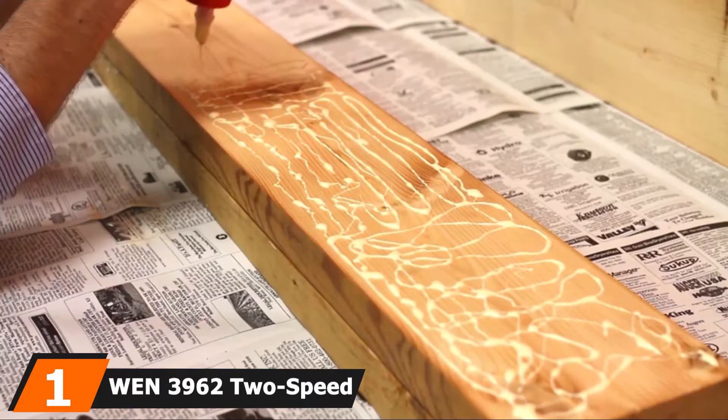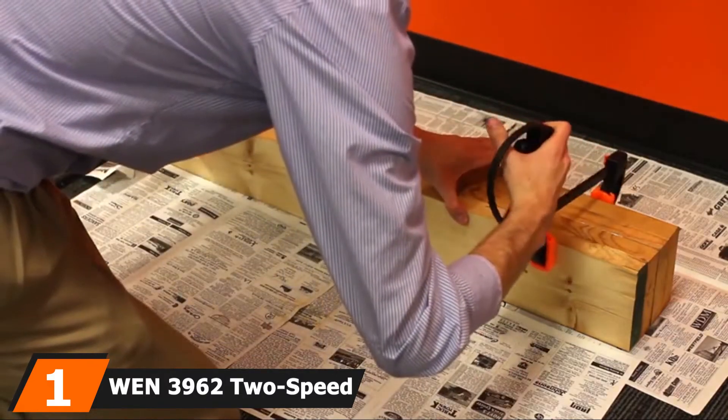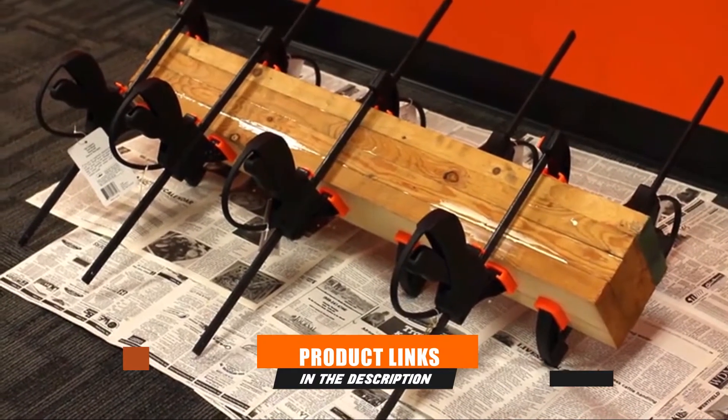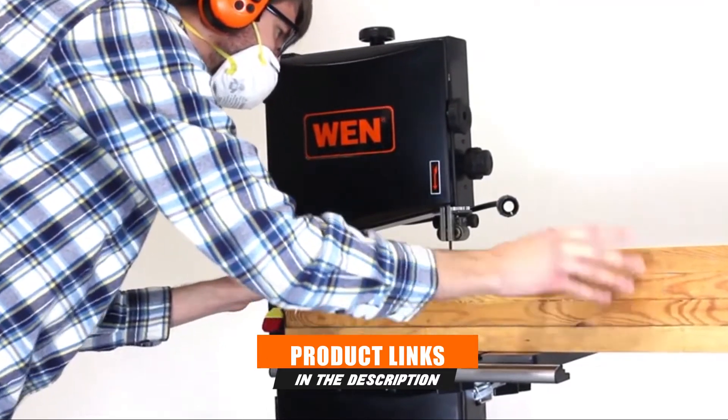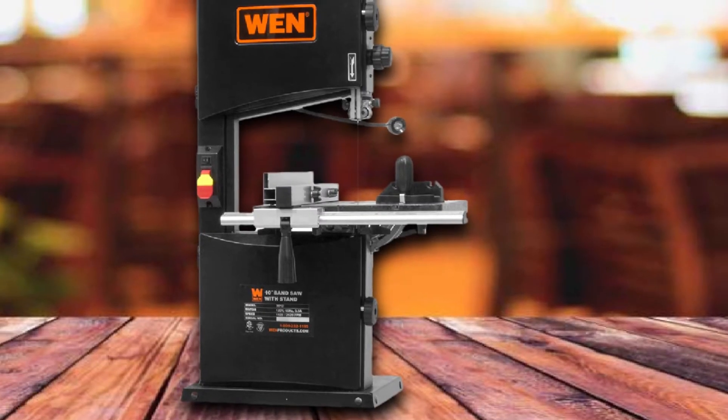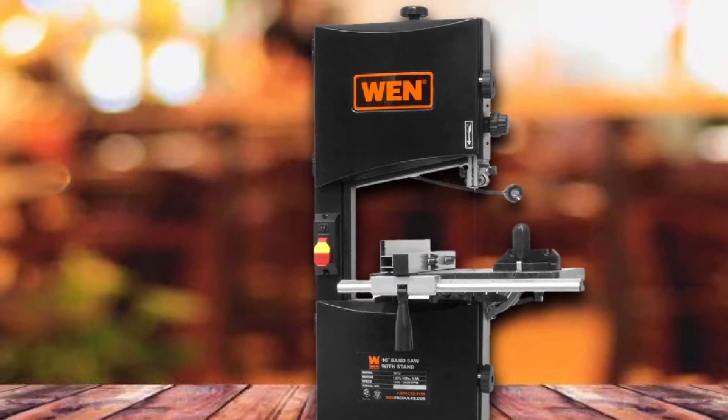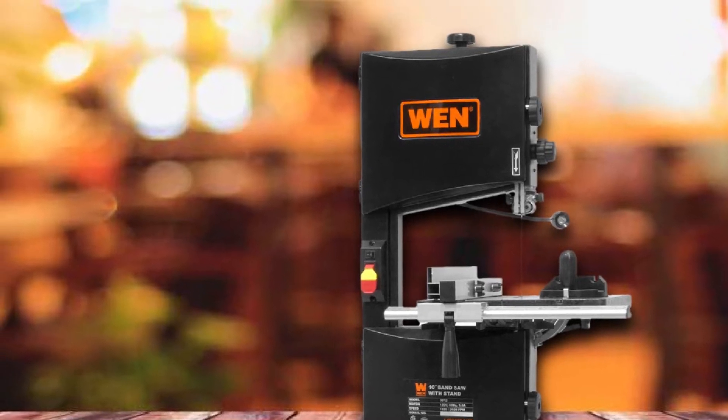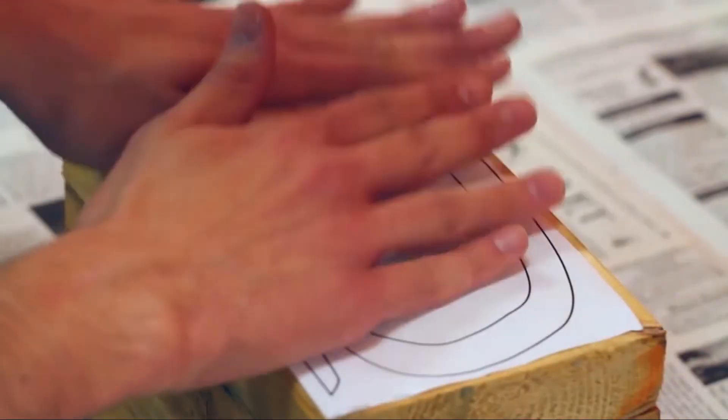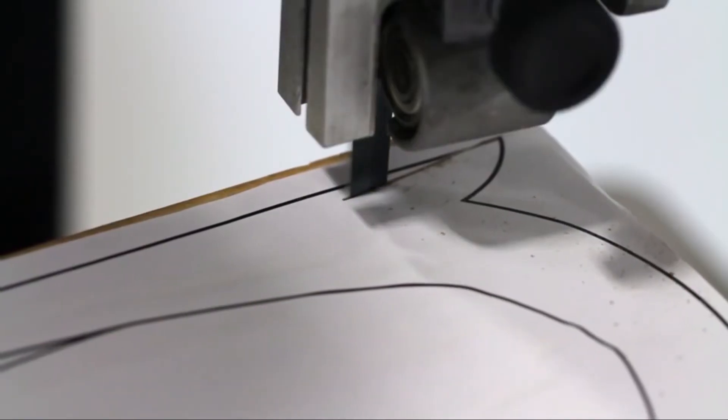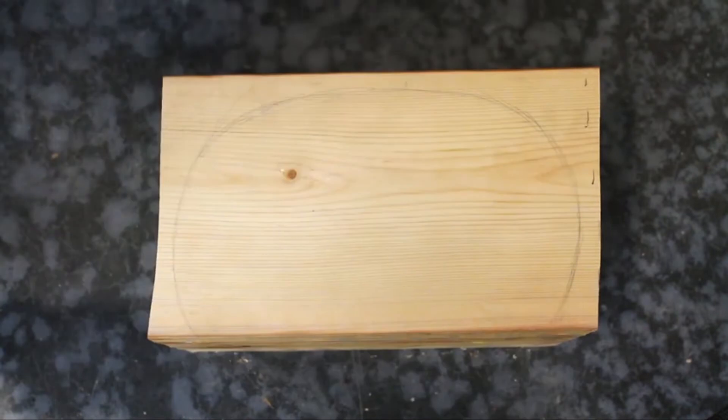At the first position of our list, we have the WEN 3962 two-speed bandsaw. It is among the best-selling woodworking bandsaws that keeps gaining positive reviews from users, and rightfully so from our experience using this machine. It is the best woodworking bandsaw, especially if you are working on a budget. This 3962 10-inch bandsaw comes with a powerful motor that runs on 3.5 amps and can cut through different types of woods as well as metals with ease and high levels of precision.